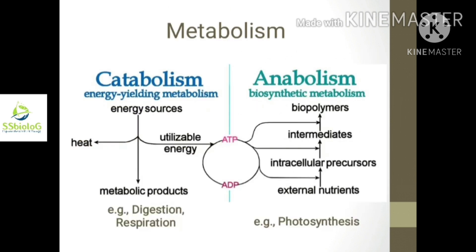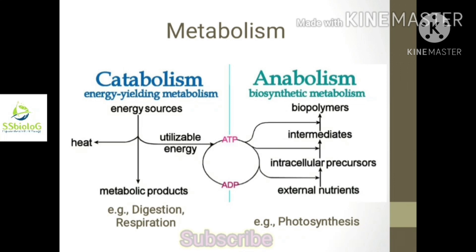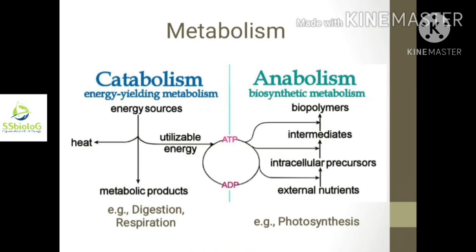The next character is metabolism. The sum total of all types of chemical reactions occurring in an individual, due to specific interactions among different types of molecules in the interior of the cells, is called metabolism. There are two types of metabolism: catabolism and anabolism.